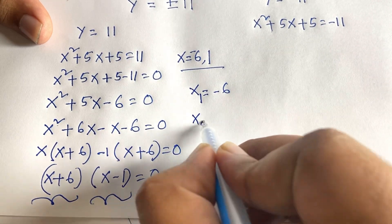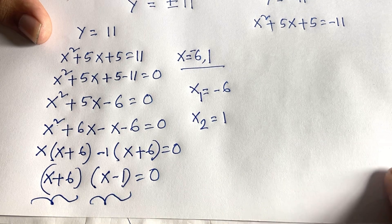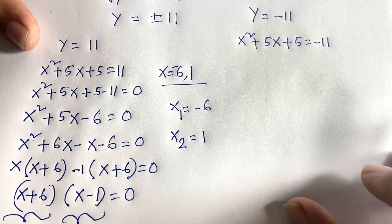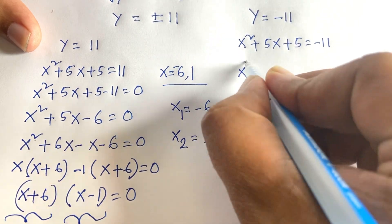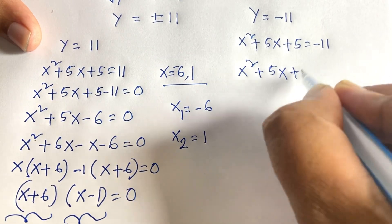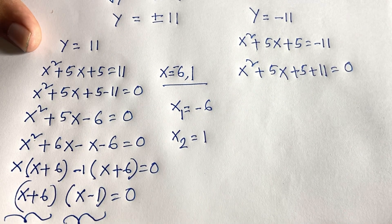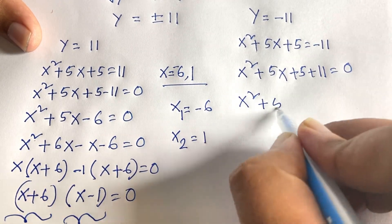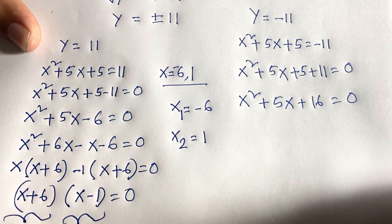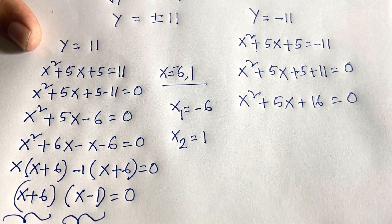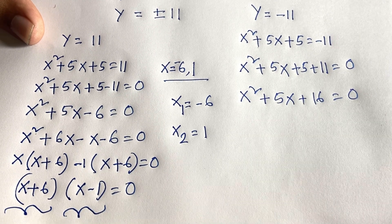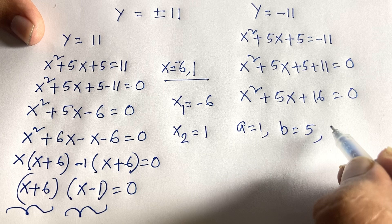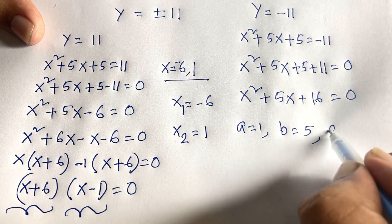So x₁ = 1 and x₂ = -6 from the first case. Now for the other equation where y = -11: x² + 5x + 5 = -11, so x² + 5x + 5 + 11 = 0, giving x² + 5x + 16 = 0. This is a quadratic equation where a = 1, b = 5, and c = 16.